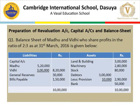Now we take question number 62 from T.S. Grewal — an 8-marks complete question. We have to prepare the revaluation account, partners' capital account, and the balance sheet of the reconstituted firm. Balance sheet of Madhu and Vidhi, who share profits in the ratio of 2:3, as at 31st March 2016: liabilities side — Madhu's capital Rs. 5,20,000 and Vidhi's capital Rs. 3,00,000.